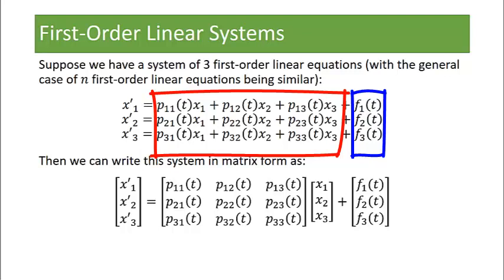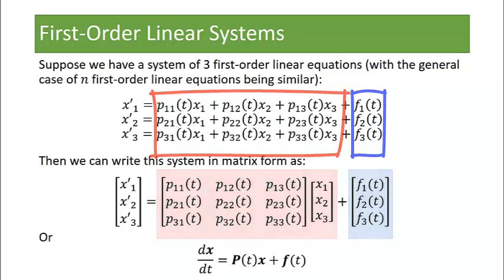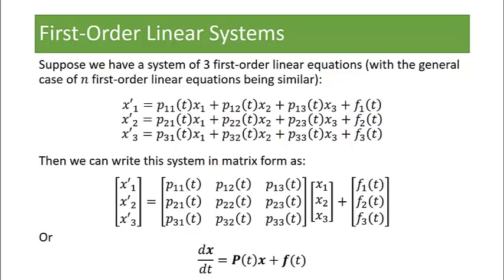So we can write this system similarly in matrix form where we've got a vector containing our derivatives x1 prime, x2 prime, x3 prime. And then a product of two matrices one containing all of our functions, the p11 through p33 times the vector x1, x2, x3. And then plus our vector containing our functions f1, f2, f3. Or we can rewrite the notation just as our derivative x prime is equal to the matrix function p of t times the vector x plus the matrix function f of t.